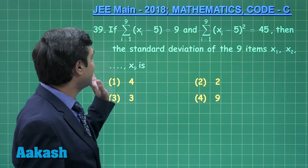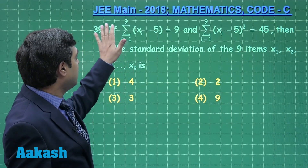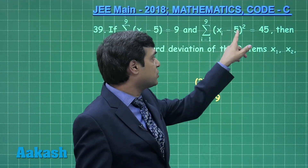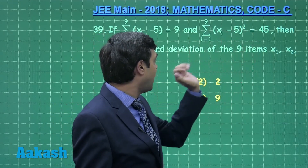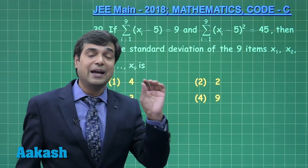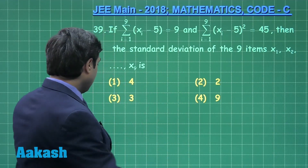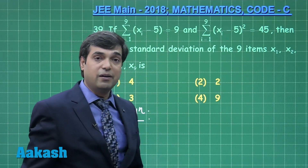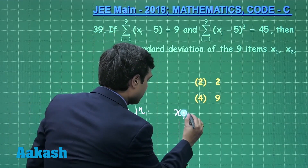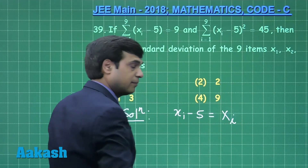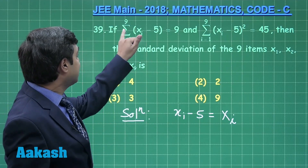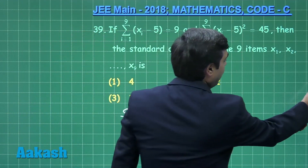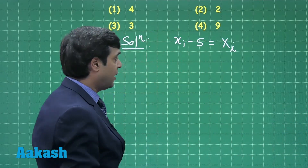Question from stats: if summation i equals 1 to 9 of xi minus 5 equals 9, and summation of xi minus 5 whole square from 1 to 9 is 45, then the standard deviation of 9 items x1, x2 up to x9 is? We start solving by letting capital Xi equal xi minus 5, so summation of capital Xi from 1 to 9 equals 9 and summation of Xi squared equals 45.